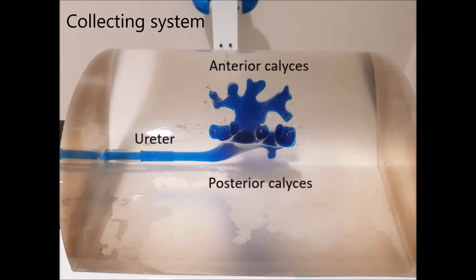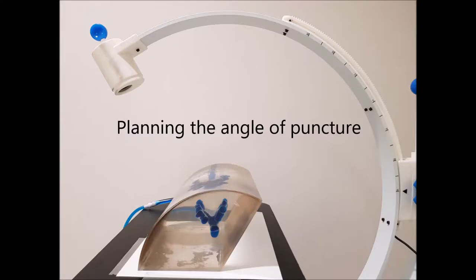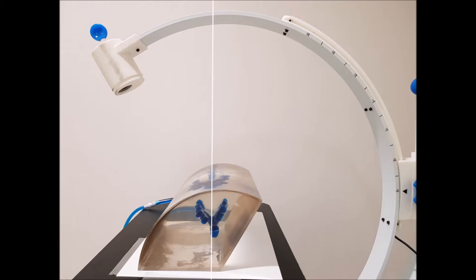In this video, we will demonstrate the puncture of a posterior calyx using the bullseye technique. When planning the angle of puncture for the bullseye technique, one must consider the angle at which the target calyx sits from the vertical.